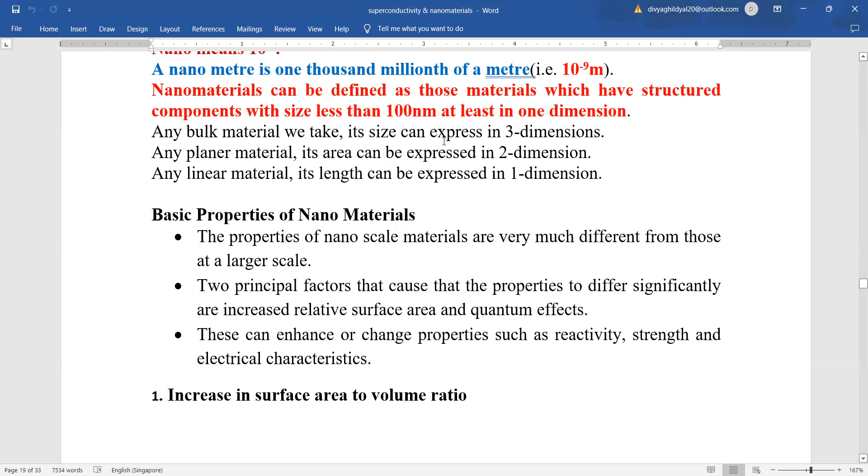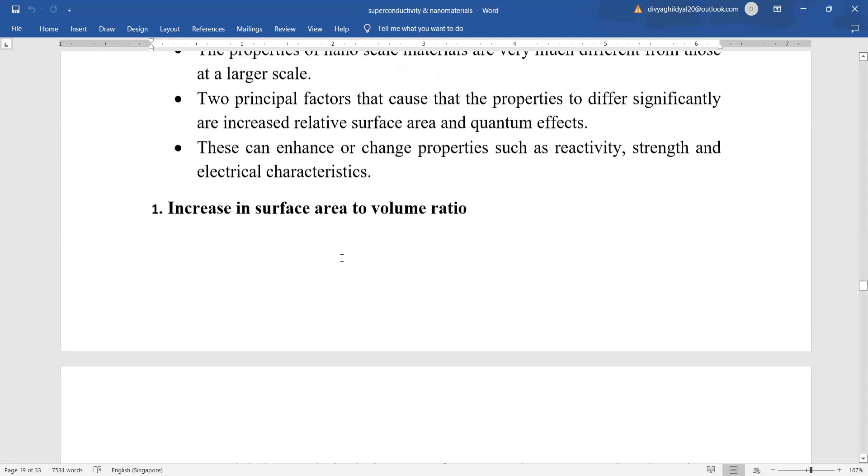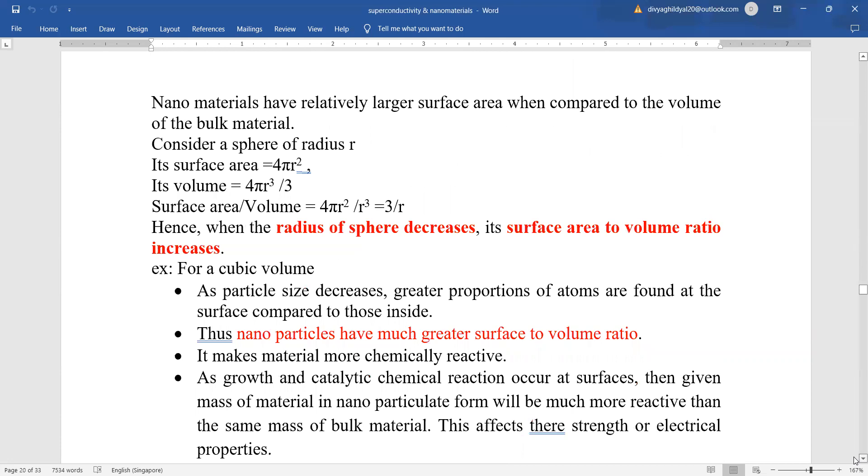At bulk material, we will take the size expressing it at three dimensions, planar two dimension and linear as one dimension. What are the properties of nanomaterial? Nanoscale materials are very much different from those at larger scale. The two principal factors that cause the properties to differ significantly are increased relative surface area and the quantum effects. These can enhance or change properties of even a chemical reaction, that is reactivity, can change the strength of a material, can change the electrical characteristics. Two important properties which you should be knowing of nanomaterials are increase in surface area to volume ratio. Nanomaterials have large surface area when compared to the volume of bulk material.